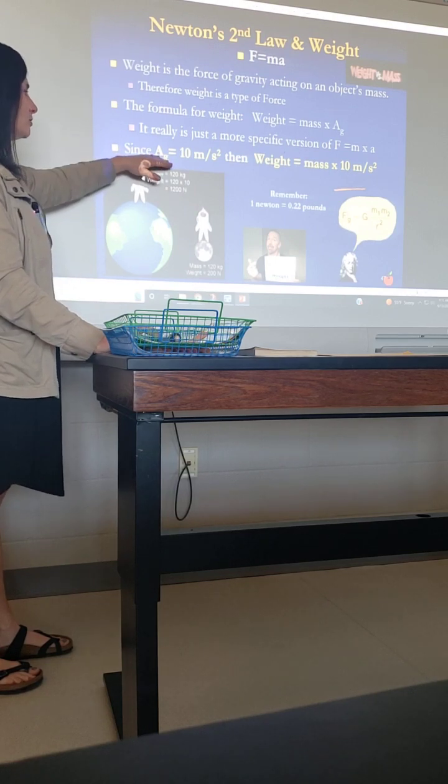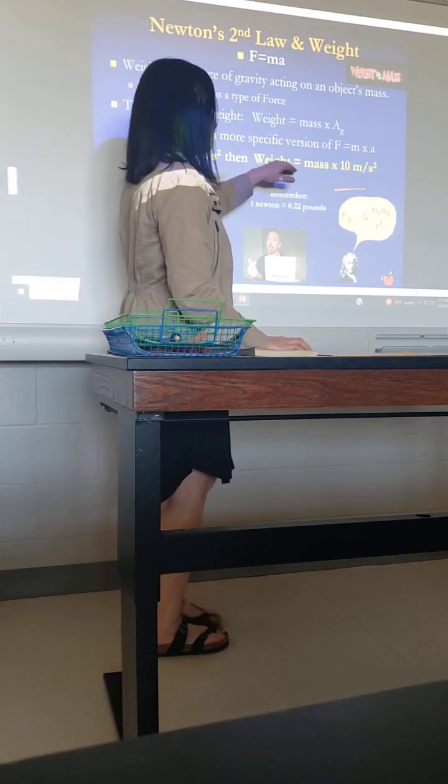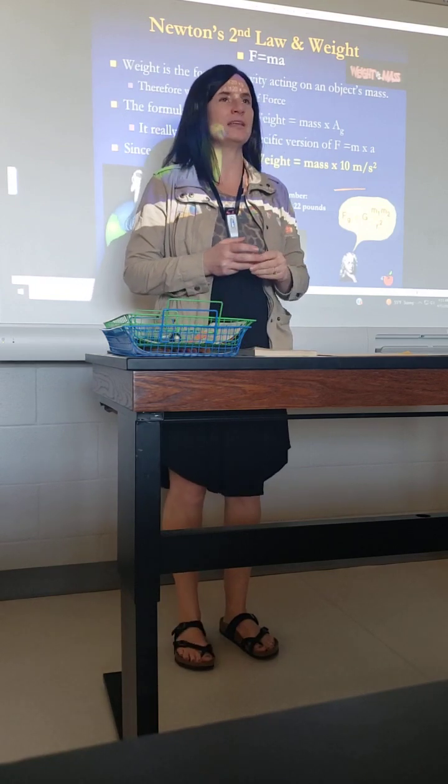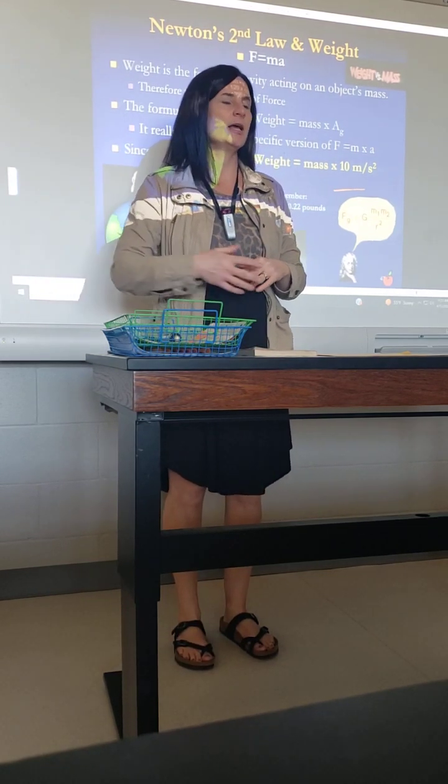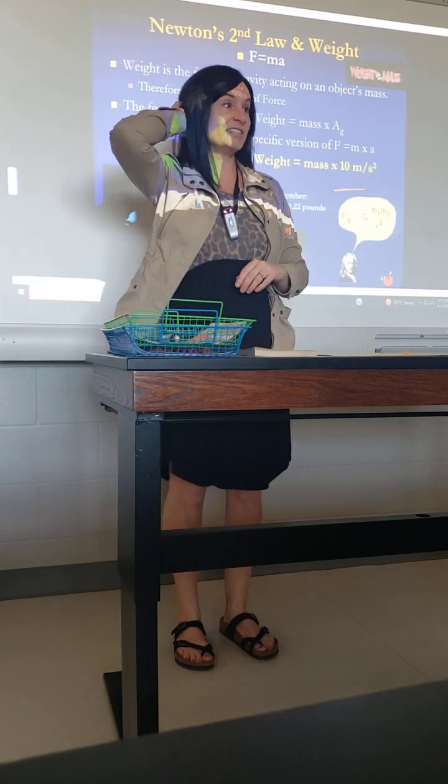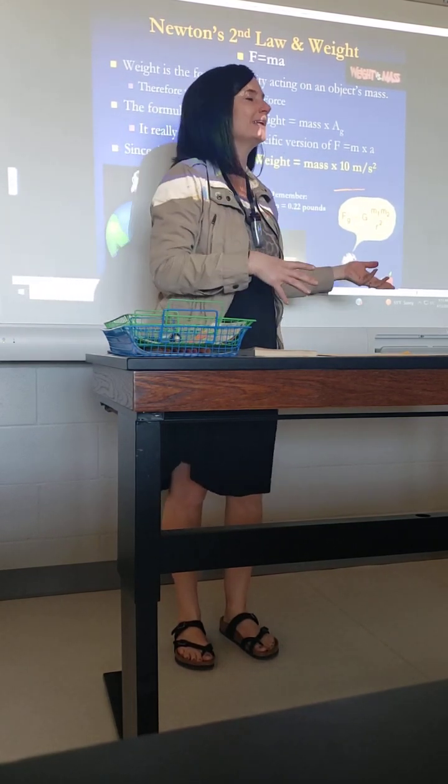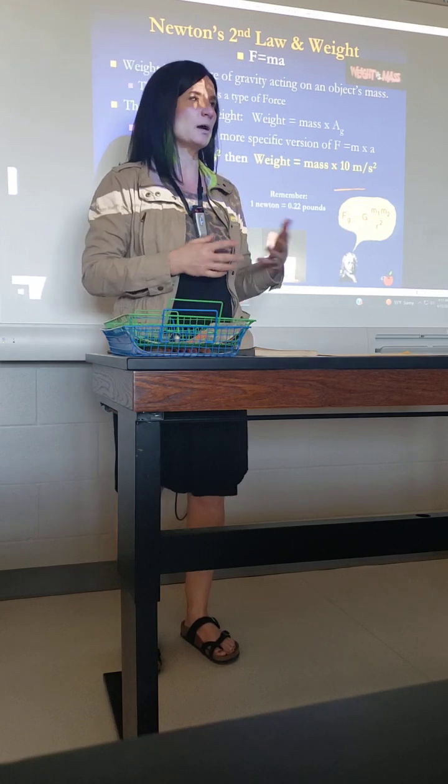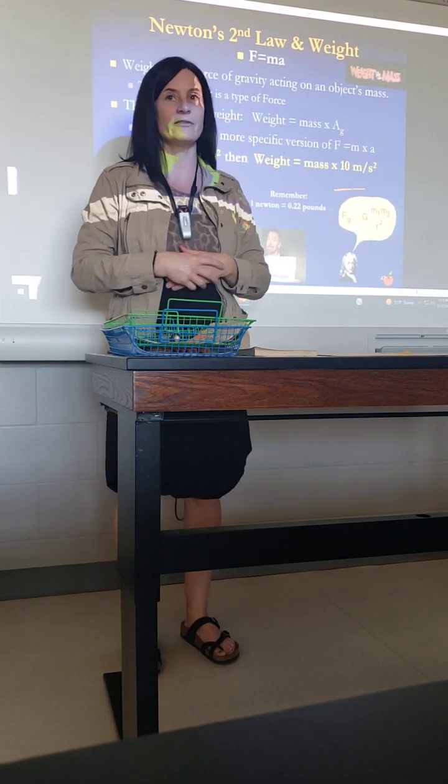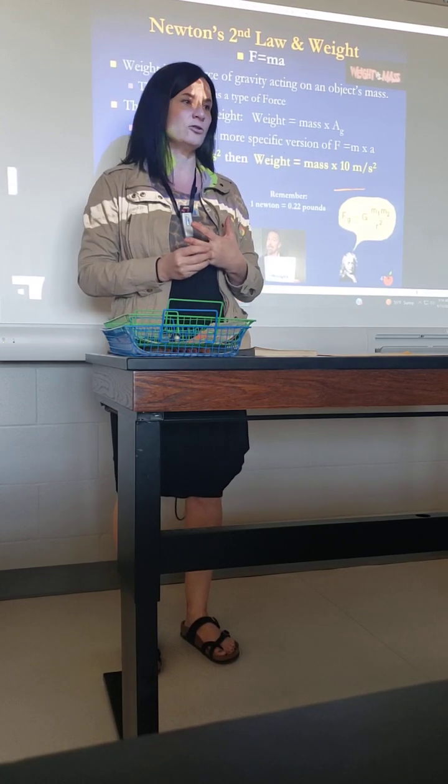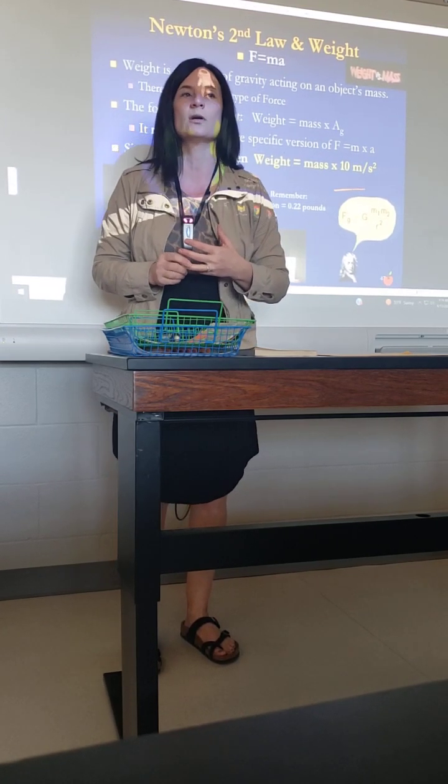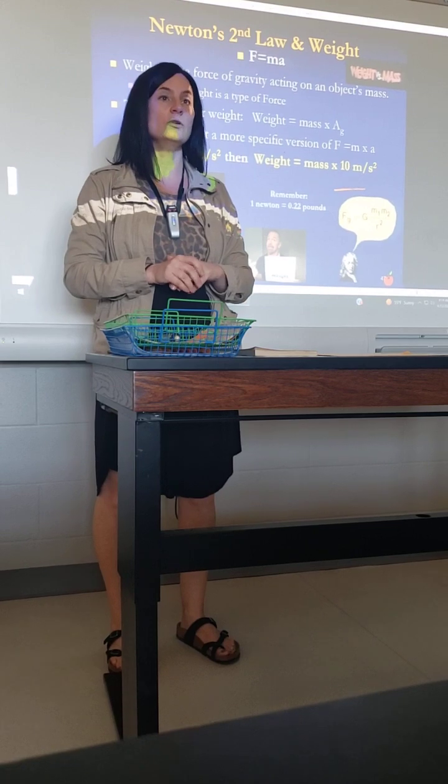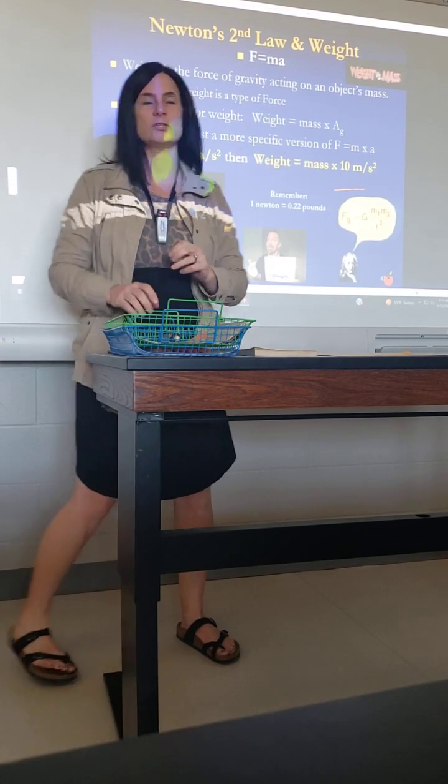And so we can take Newton's second law and we can make it more specific where weight is the force, mass is still just mass, and then acceleration is technically the acceleration due to gravity. So we're basically just substituting the weight for force and acceleration of gravity for the generic acceleration. So it's just a more specific version of his second law. And so since acceleration due to gravity is 10, most of the time it's just weight equals mass times 10.